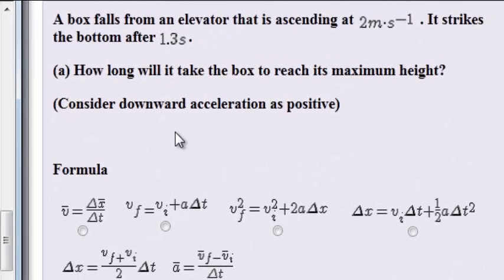A box falls from an elevator that is ascending at 2 meters per second. It strikes the bottom after 1.3 seconds. The first question asks: how long will it take the box to reach its maximum height? Consider downward acceleration is positive.